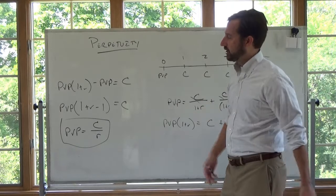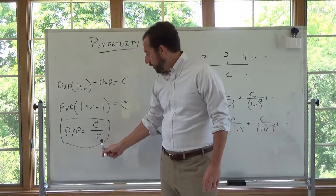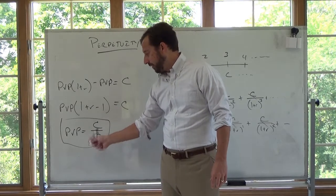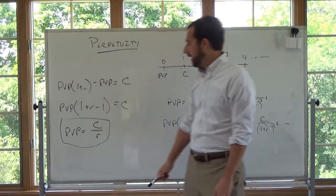Easy. Now, of course, we can rearrange this. So if you wanted to get the rate, the rate is equal to the C divided by the present value of perpetuity. So we can rearrange this for R or C easily.